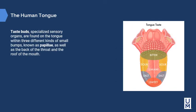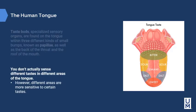Taste buds are specialized sensory organs found on the tongue within three different kinds of small bumps known as papilla, as well as the back of the throat and the roof of the mouth. It's a common misconception that you only taste food in certain areas of the tongue. We grew up believing the tongue has four taste zones, but this is not the case. These tastes, along with the fifth taste called umami or savory, can be sensed in all parts of the tongue. The sides of the tongue are more sensitive overall than the middle, and the back of the tongue is more sensitive to bitter tastes.